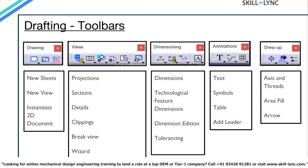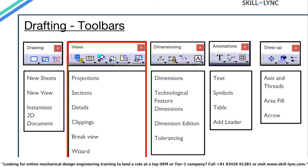This slide shows the most frequently used toolbars in the drafting workbench. The Drawing toolbar gives us access to commands like New Sheet, New View, and Instantiate 2D Document. From the Views toolbar, we can insert various views like Projections, Sections, Details, Clippings, and Breakview.